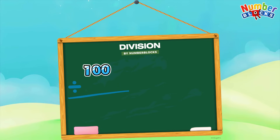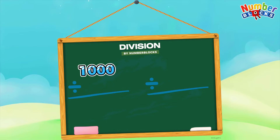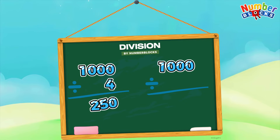100 divided by 4 is equals to 25. 100 divided by 2 is equals to 50. 1,000 divided by 4 is equals to 250. 1,000 divided by 2 is equals to 500.